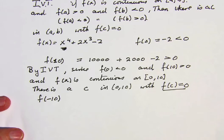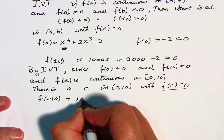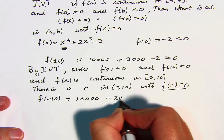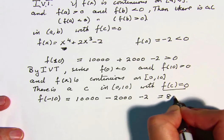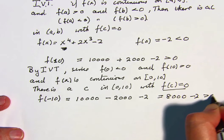Well let's try f of negative 10, because it's easy to calculate with. And this is again 10,000 minus 2,000 minus 2. So that's 8,000 minus 2, which is certainly greater than 0.